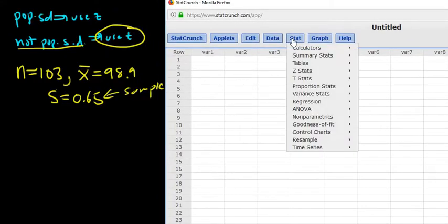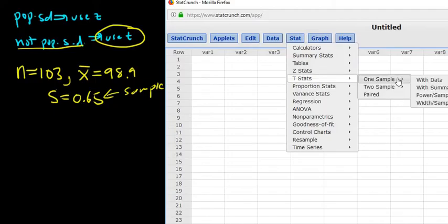We go to stat, t-stats. It's one sample because we only have one n. Later on we'll have two samples. So one sample, and it's with summary. The only time we use with data is if they give us a bunch of numbers.